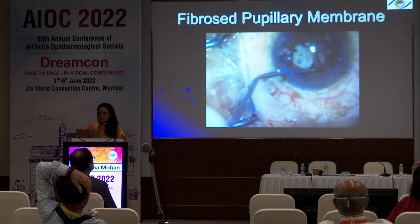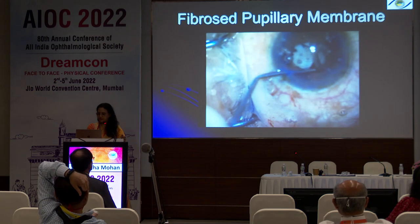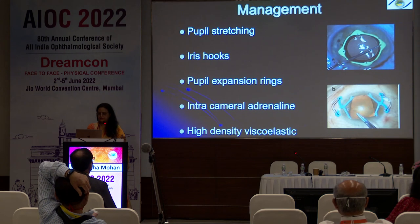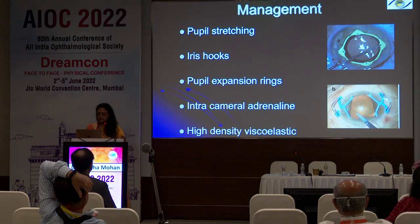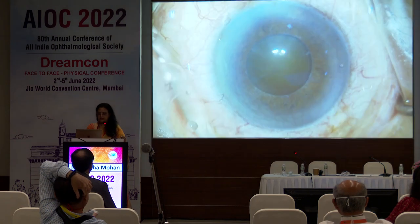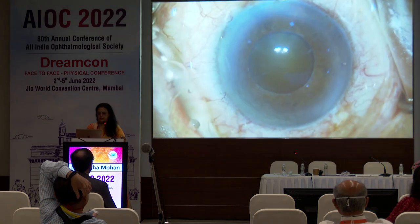Nowadays we have excellent pupil expanders, so we don't have to go for iris stretching because that can cause the iris to become loose and floppy and actually present itself into the FACO probe. This is a fibrous pupillary membrane — we are using vitrectomy scissors to cut it. The management options include pupil stretching using iris hooks, pupil expansion rings, intracameral adrenaline in patients who have not been dilated, and high-density viscoelastics.